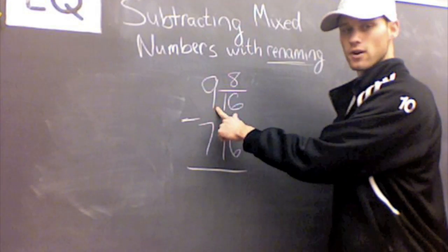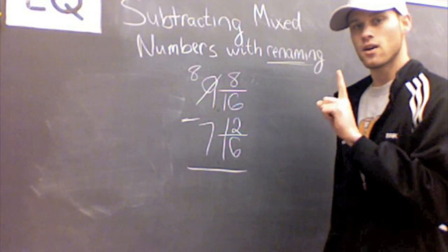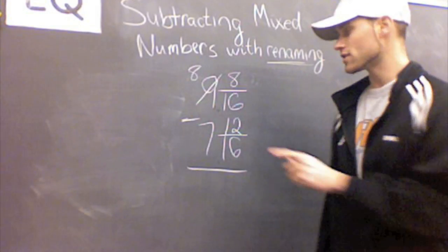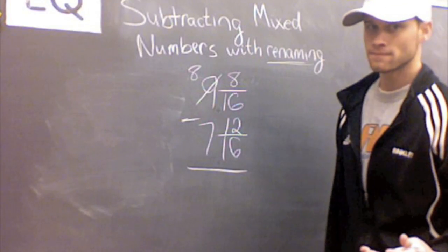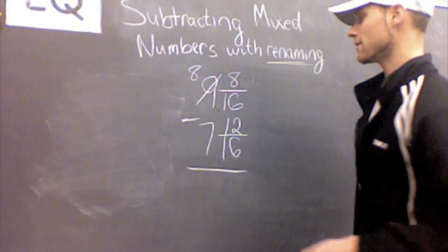Let's take one out of our whole number, the 9. Since we're taking one whole out of 9, we're essentially adding a whole to our fraction. And we know that to represent one whole, all we have to do is make a fraction with the same number as the numerator and the denominator.